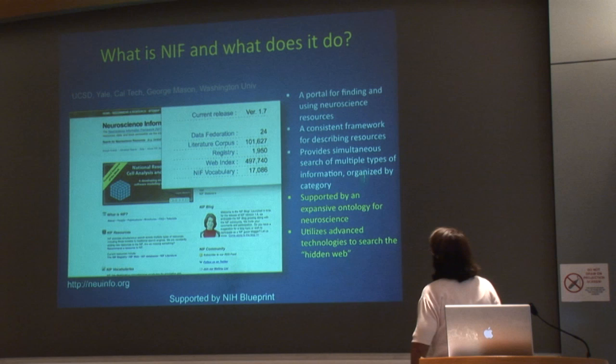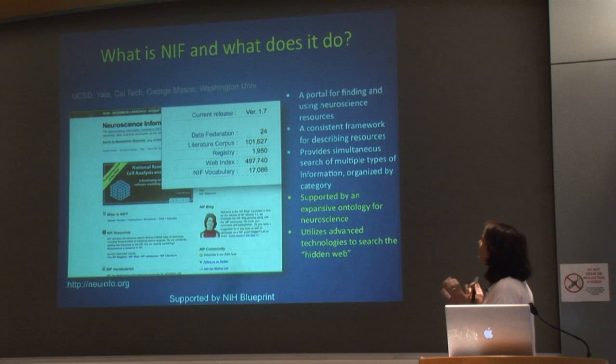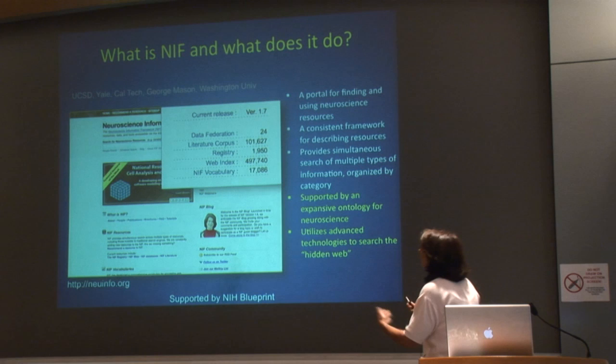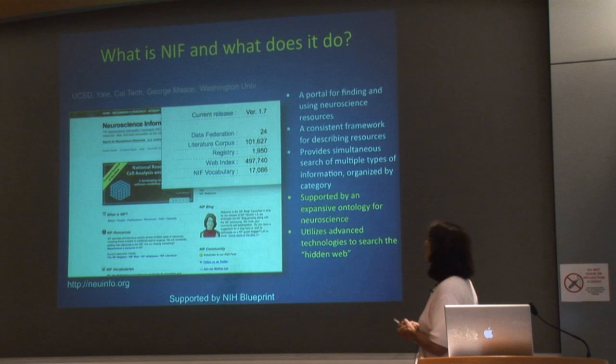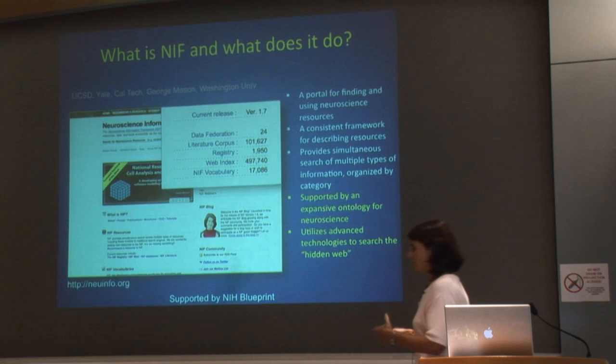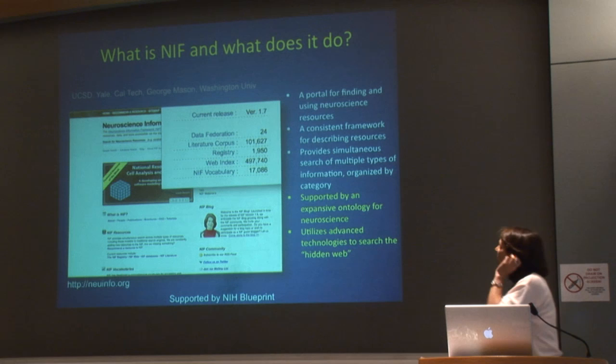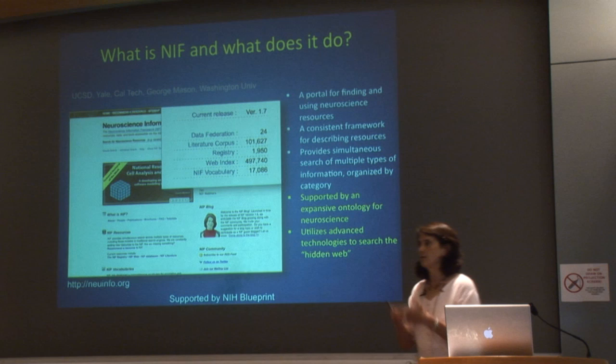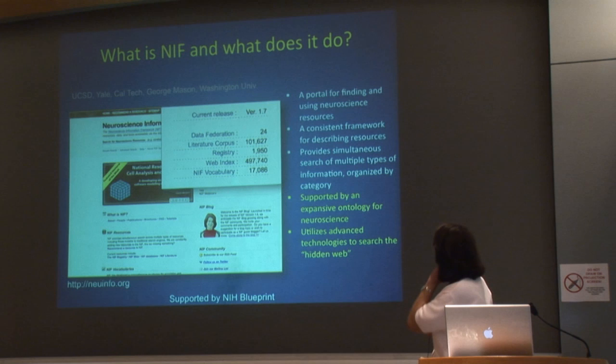So basically, what is the NIF and what does it do? In its simplest form, the NIF is a portal—an online presence for finding and using neuroscience resources. The tools that scientists need, the data that scientists need, are out there all the time, and new ones are being added all the time. NIF is really trying to provide a consistent framework for describing these resources, so that people creating new tools aren't doing it according to whatever specification they happen to think of, but recognizing that these things are all interconnected and need to be brought together. So we need standards.